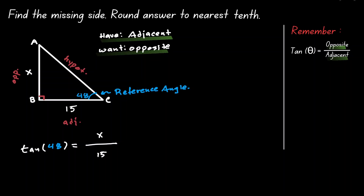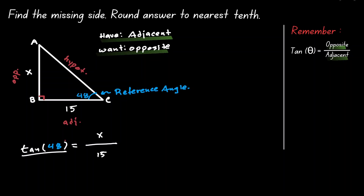Our objective is to solve for x. This expression, tangent of 48, is a number — we're going to treat it as such. To make the next step more clear, instead of writing it as tangent, let's write it as tangent over 1. By doing this, we can see that our next step is cross multiplication, so 1 times x is just x.